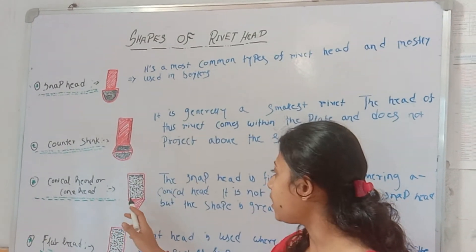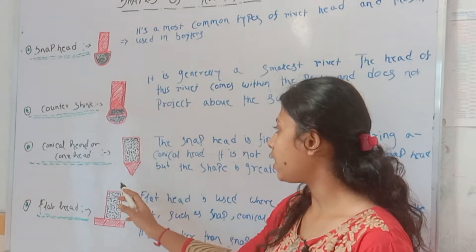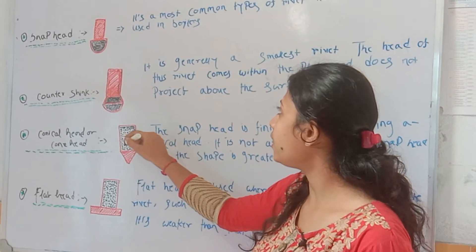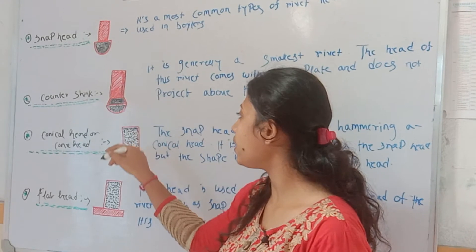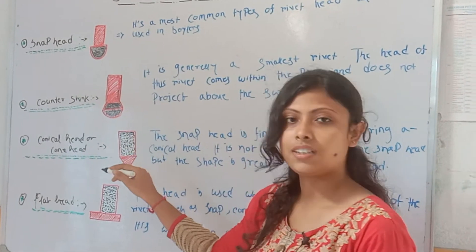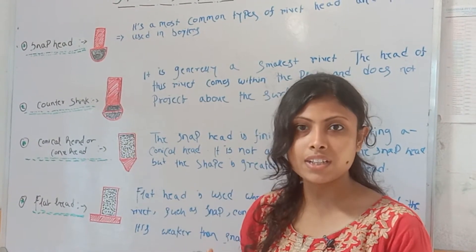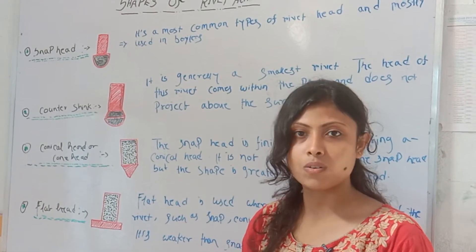The third wall is the conical corner. Number one is the snap head. Snap head is made by hammering.